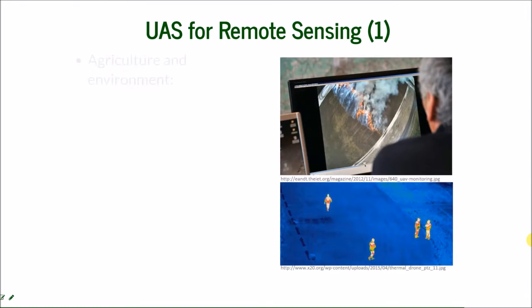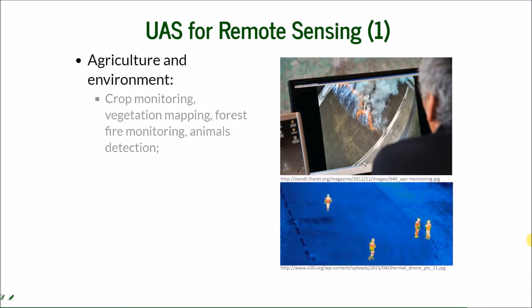What about UAS for remote sensing? In agriculture and environment, it can be used for crop monitoring, vegetation mapping, forest fire monitoring, and even animal detection.